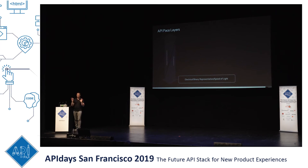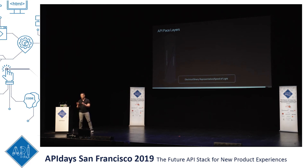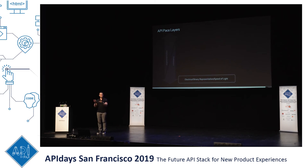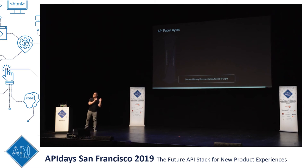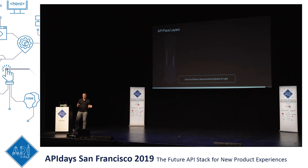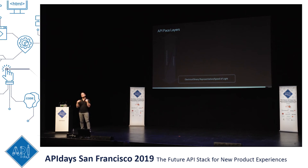So when it comes to the web or net APIs, I see a similar stack, and I'm going to insert my standard default warning about models. All models are wrong but some are useful. The purpose of this model is to illustrate and articulate some concepts. It's not meant to be comprehensive or exhaustively academically proven sound. It's to illustrate ideas, so walk with me on this thought experiment.